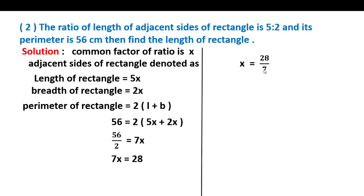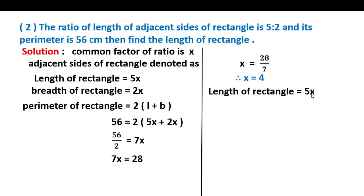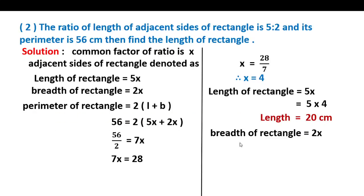Therefore x = 28 upon 7, so x is equal to 4. The x value is 4, so the length is equal to 5x = 5 × 4 = 20 cm. The breadth is 2x = 2 × 4 = 8 cm. Therefore the length of the rectangle is 20 cm and the breadth is 8 cm.